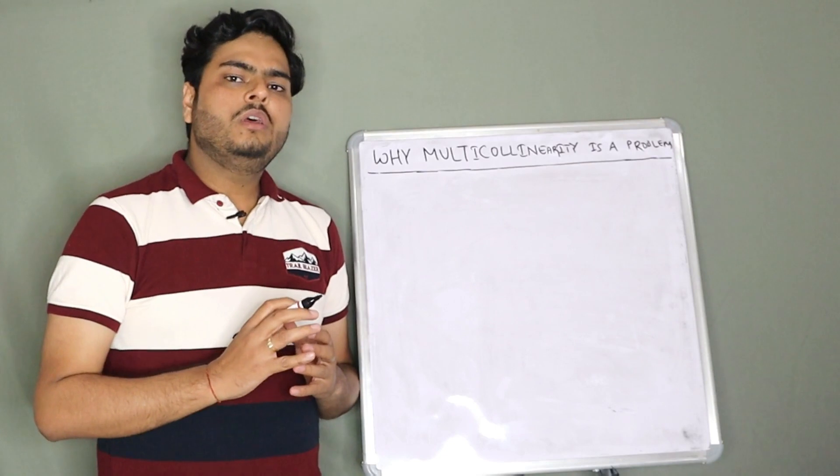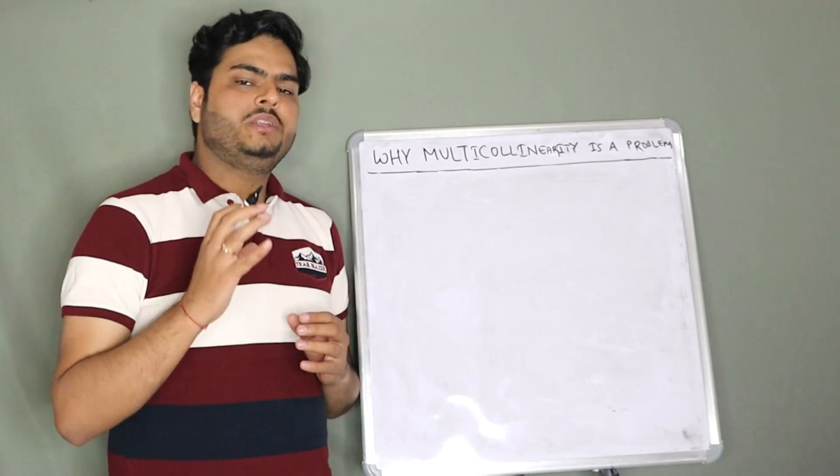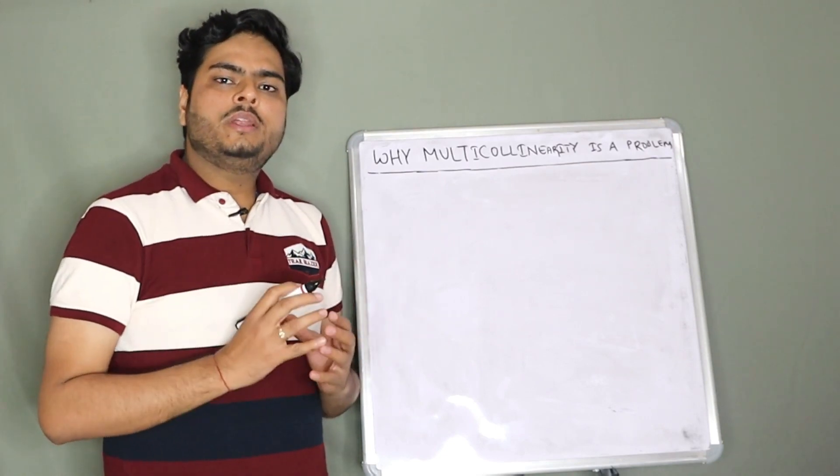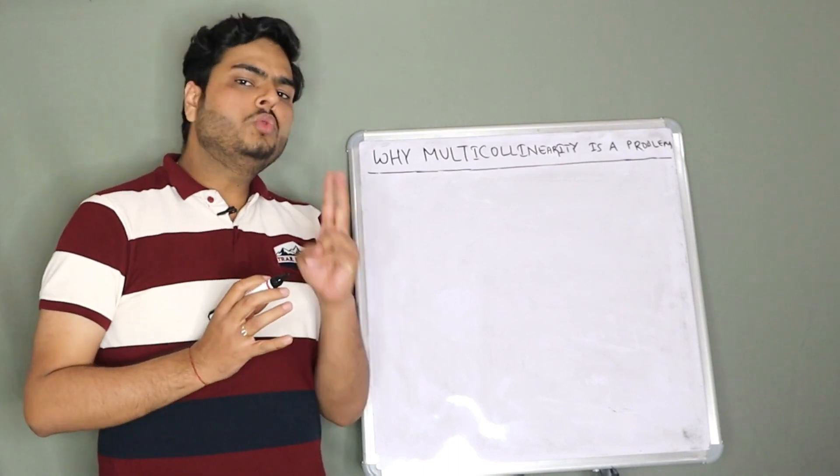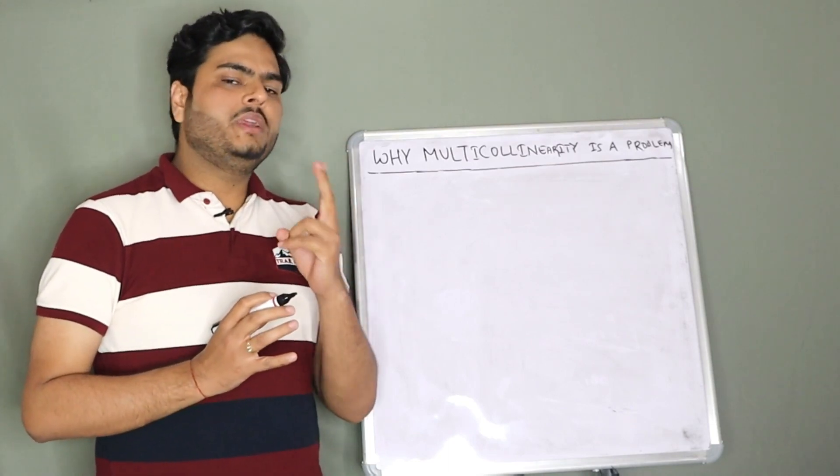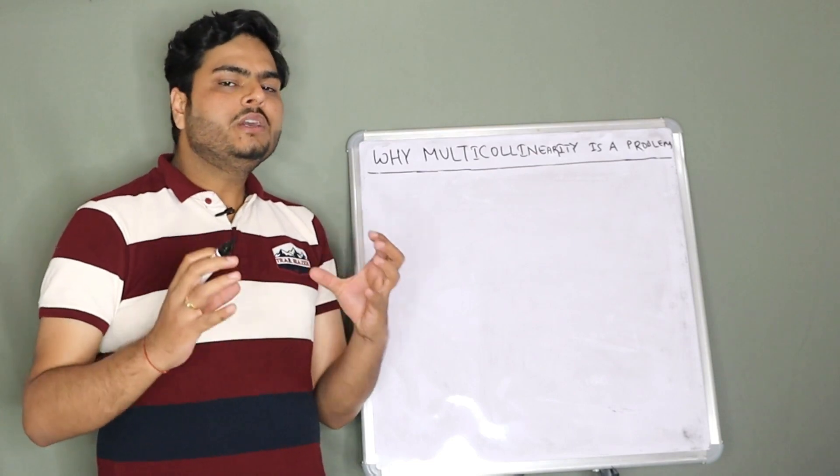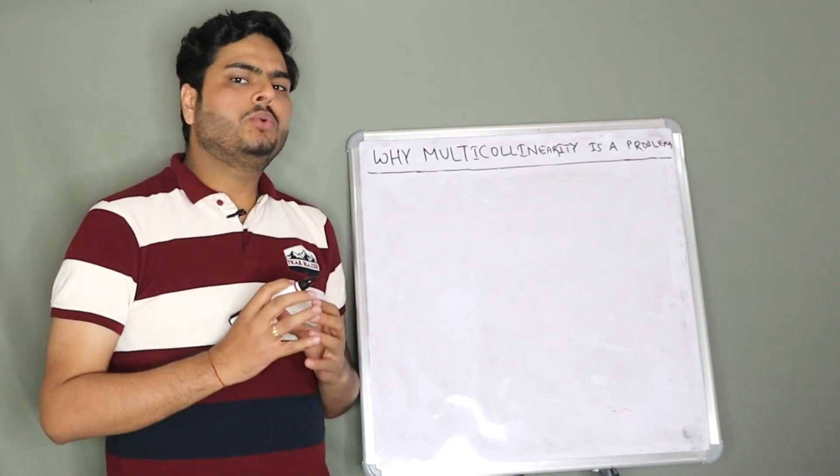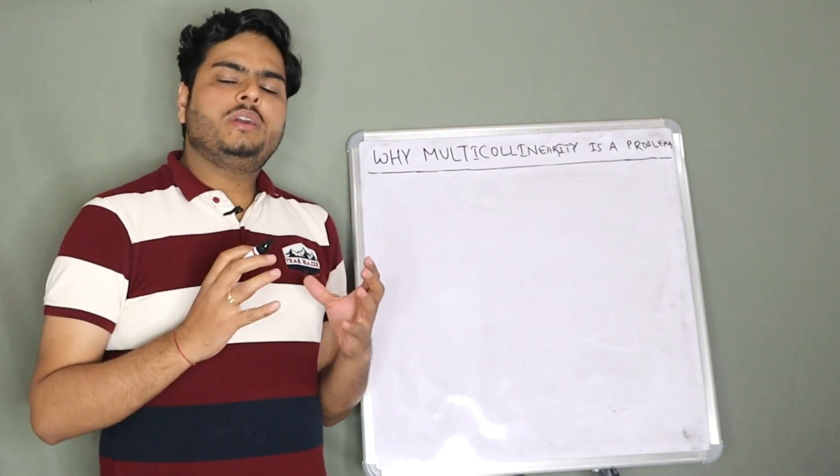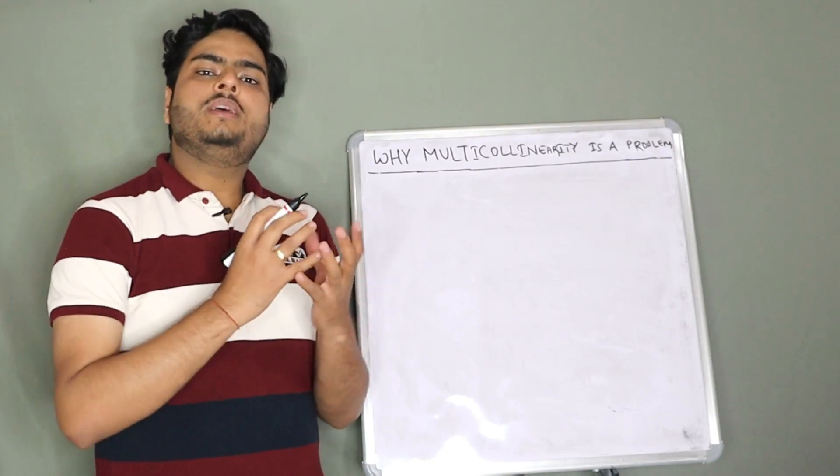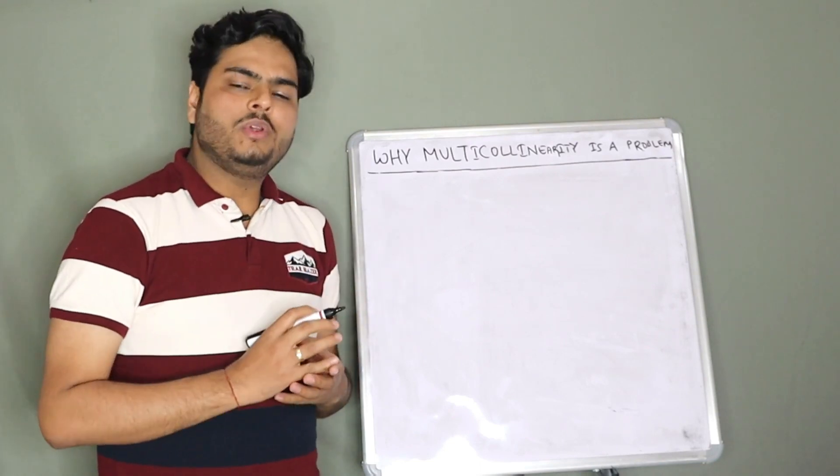First of all, what is multicollinearity? Multicollinearity is a scenario in which two of your independent variables are highly correlated. Now what is correlation? Correlation is if two variables are strongly related to each other.